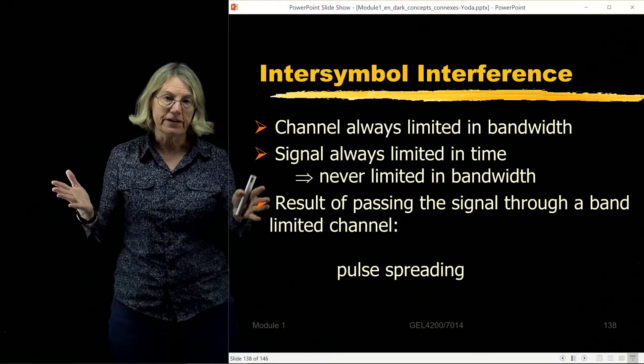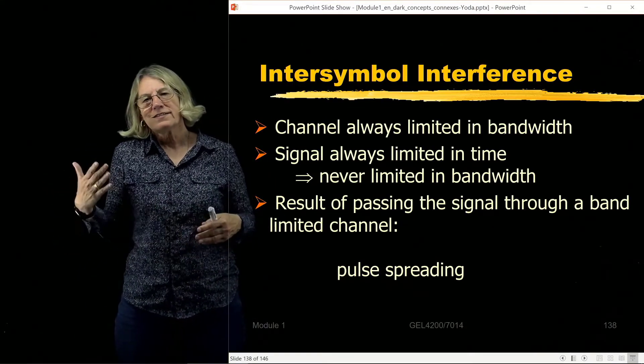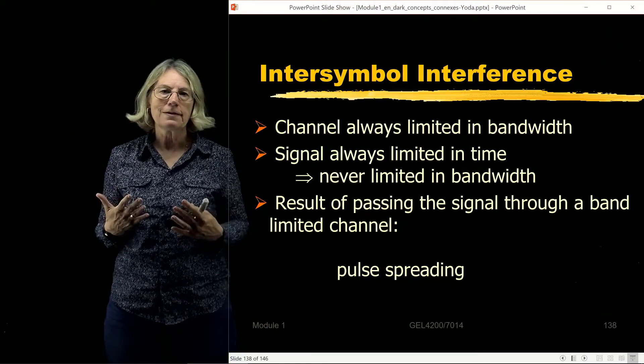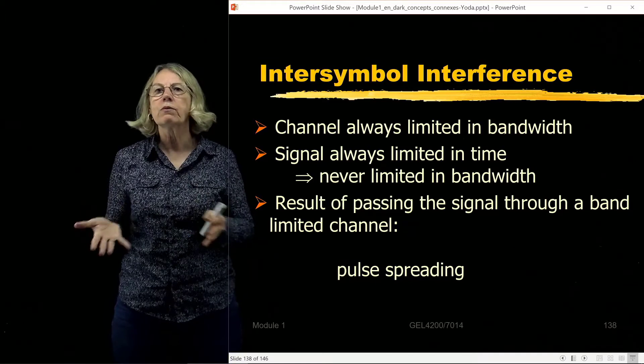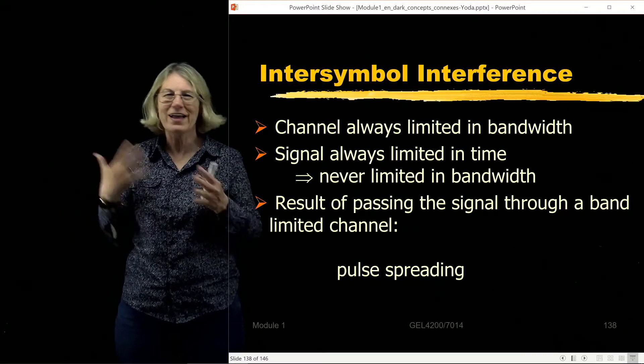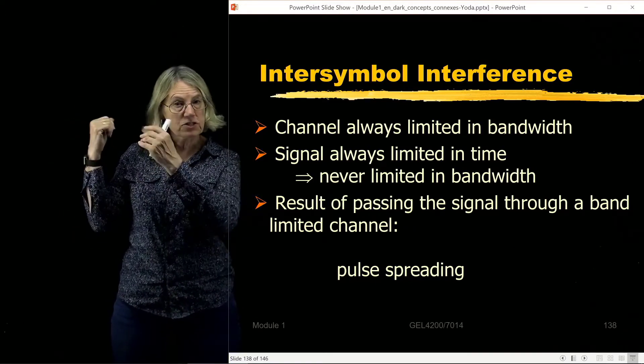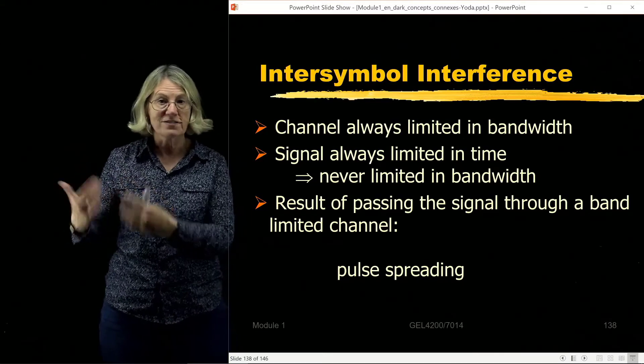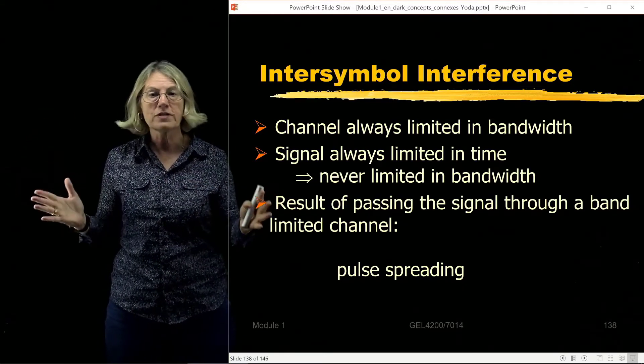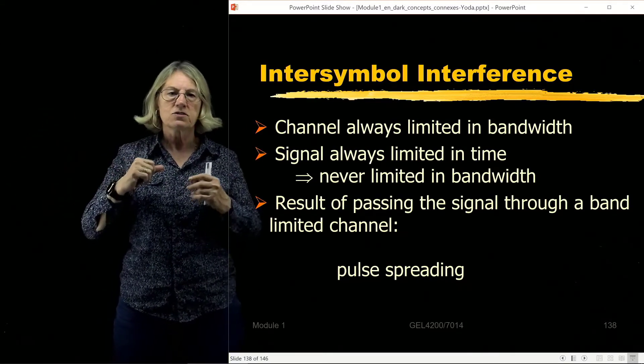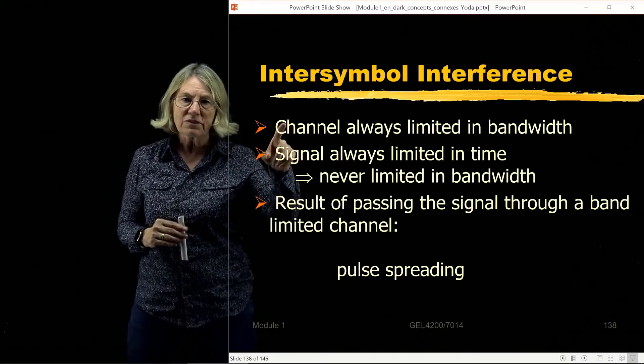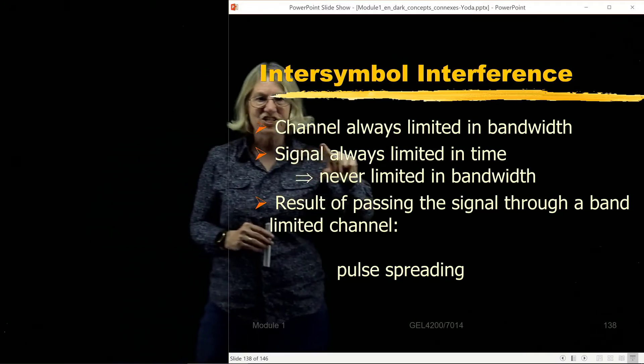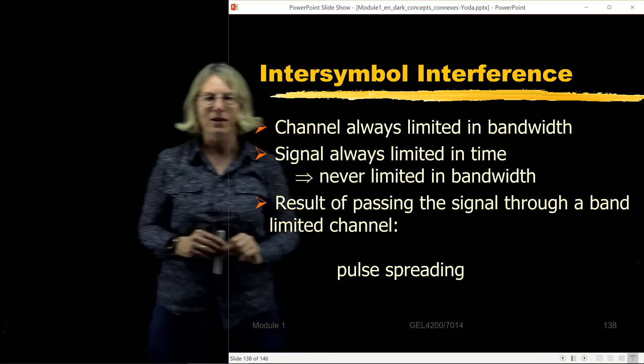So inter-symbol interference. We can have some very simple ideas that motivate for us why we would be interested in inter-symbol interference, why it comes up, how does it pop up. I talked about thermal noise—it pops up because any circuit has thermal noise in it, so we have to deal with it. So what is it about this impairment? Where does it come from? We start with the first bullet, which says that any channel is always limited in bandwidth.